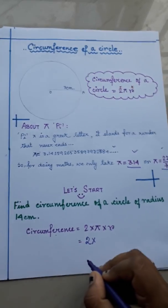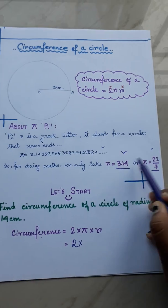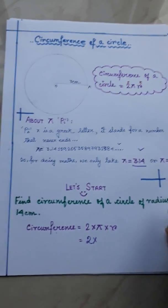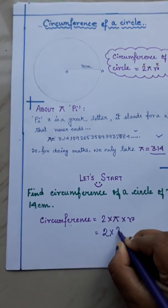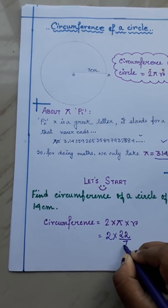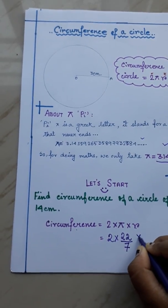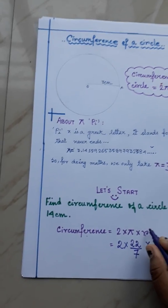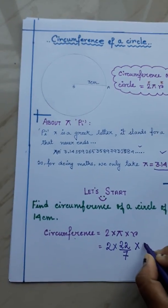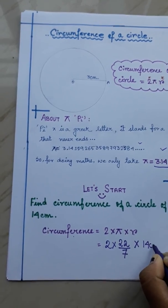As for our convenience, we are taking this value of the pi. We will take this value, 22 by 7. So here we will write 22 by 7 into r. r means radius. And here radius is given. That is 14 cm. So here we will write 14 cm.